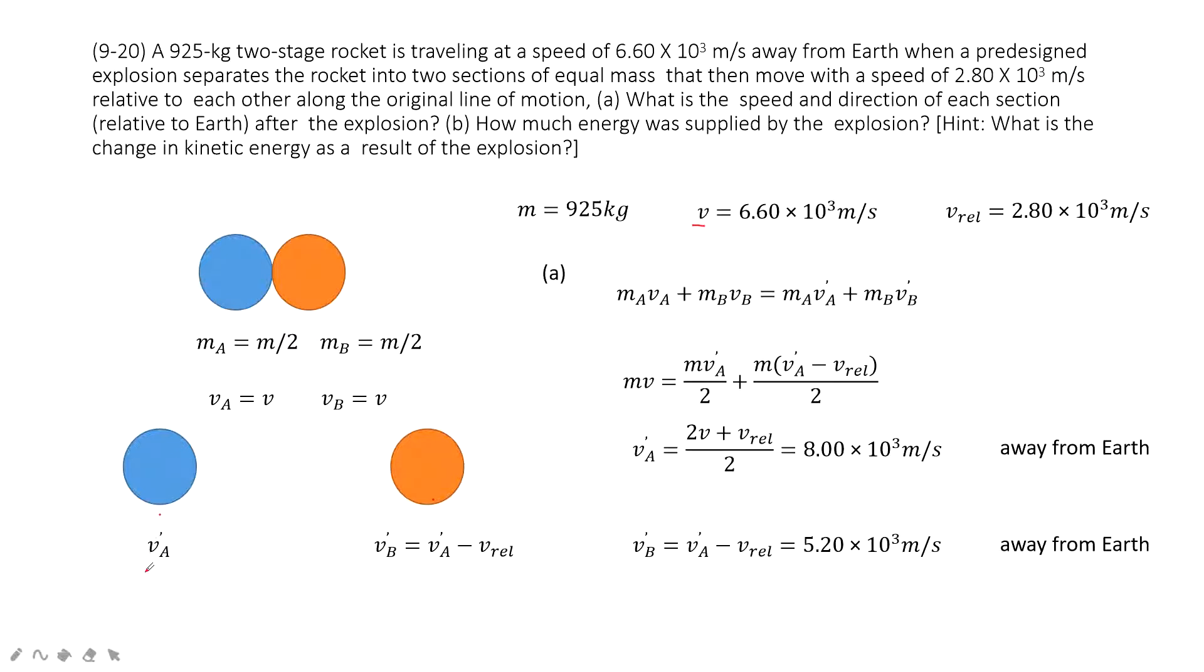So we can write the final velocity for part A is Va plus, and the final velocity for part B is Vb plus. And Vb plus equals Va plus minus relative velocity. This is the only thing we know. So now the thing is, can you find the final velocity for each one?